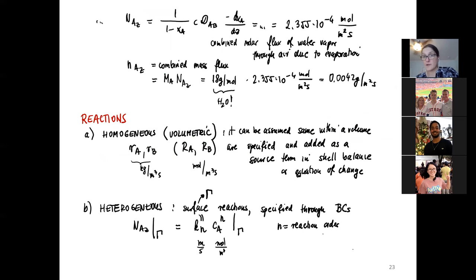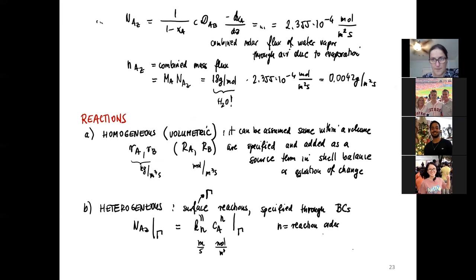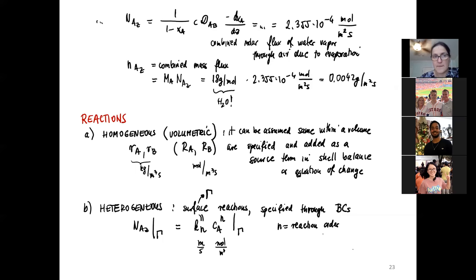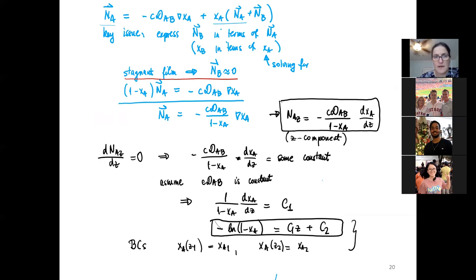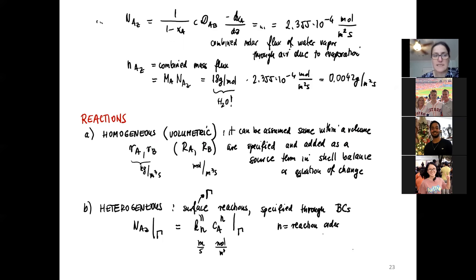Now we're moving on to add some reaction terms. Last time we reviewed what types of reactions we can have, and today we're going to solve a problem. I listed how boundary conditions can look depending on the reactions present. The stagnant film didn't have any reaction at all — there was no source term, nor did any reaction tell us anything about how to recover N_B.